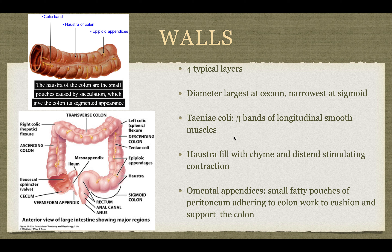The teniae coli are three bands of longitudinal smooth muscles, and those form a long colic band. They help form the haustra, which are like pouches, and those pouches are called sacculations. This is due to the teniae coli being shorter than the actual colon itself, which squeezes and scrunches everything together.